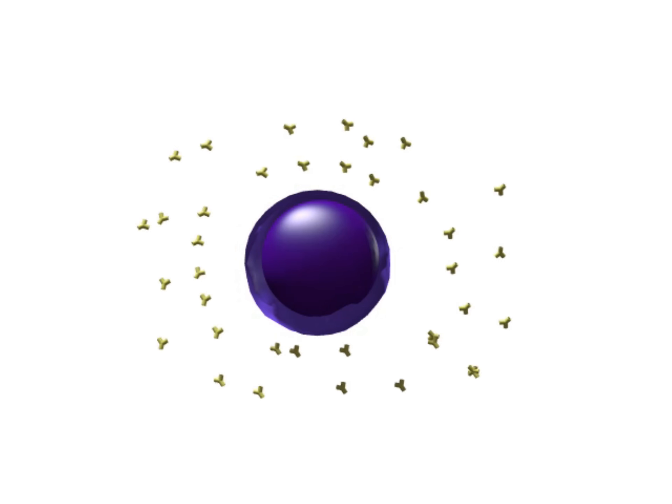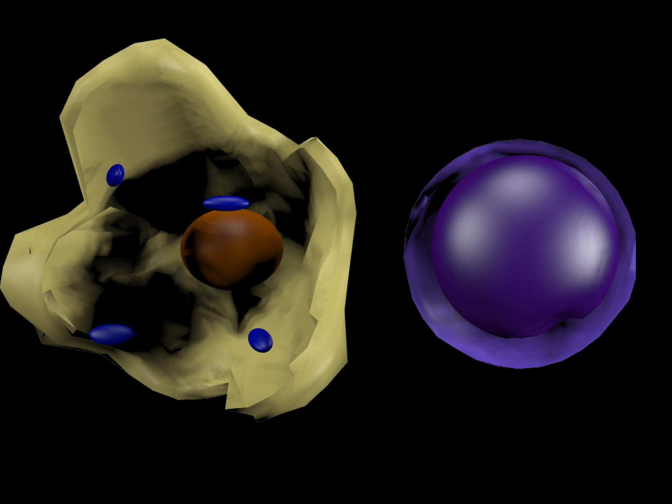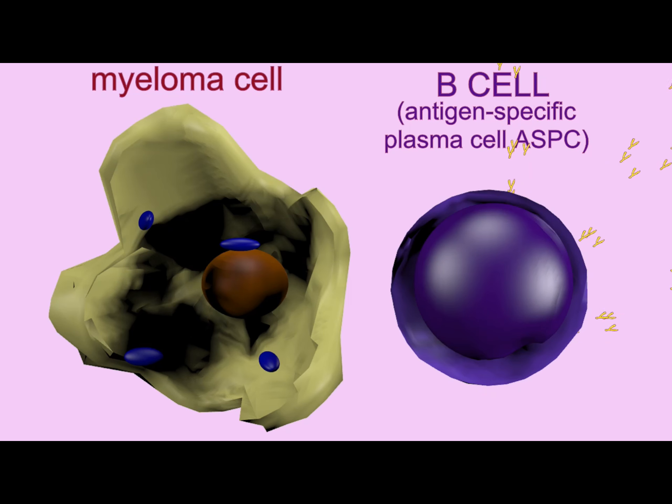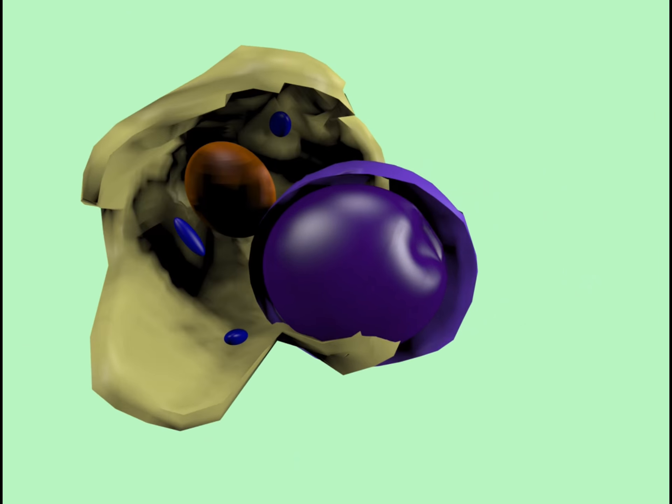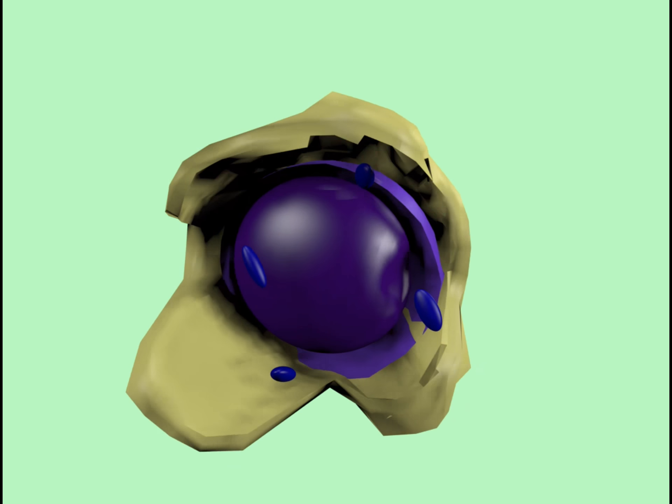This is achieved by fusing two different cells together. First, a B cell, a plasma cell which produces the antibodies of interest, to a cancer cell often obtained from mice from a myeloma line. In the presence of polyethylene glycol, these cell membranes will fuse.